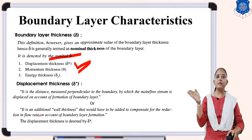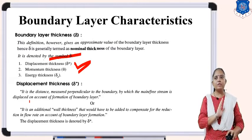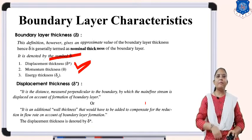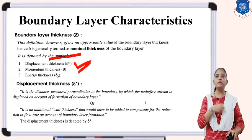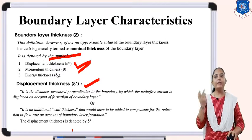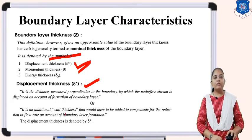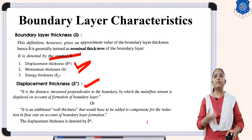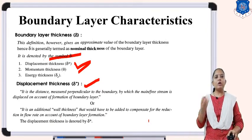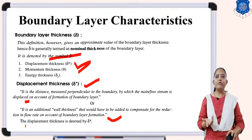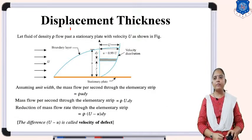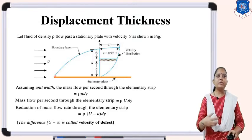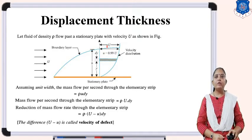What is displacement thickness? Displacement thickness is a distance measured perpendicular to the boundary by which the main stream is displaced on account of formation of the boundary layer — denoted by delta star. It can also be defined as the wall thickness that would have to be applied to compensate for the reduction in flow rate on account of boundary layer formation. This is the figure showing the displacement thickness — the boundary layer and velocity distribution are shown.